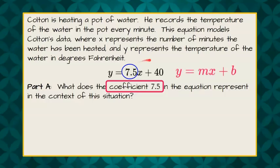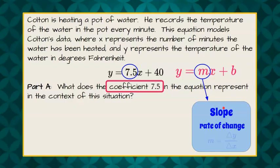We know that this is written in the form y equals mx plus b, where m represents the slope, which is also our rate of change, expressed as the change in y over the change in x.